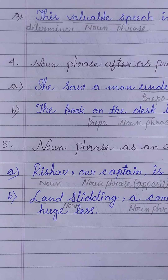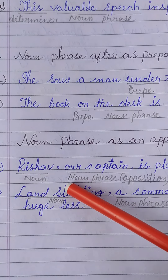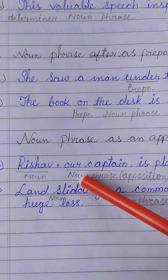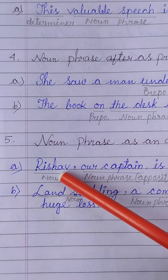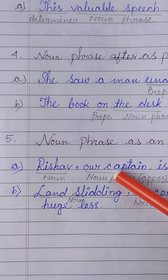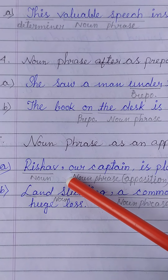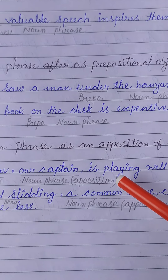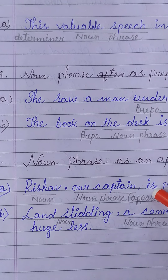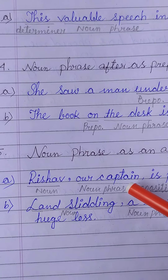In this sentence, 'Rishabh' and 'our captain' are the same person. 'Rishabh' is the noun and 'our captain' is the apposition. These same nouns are placed side by side. 'Our captain' is a group of words and it is a Noun Phrase as it acts as a noun in this sentence.